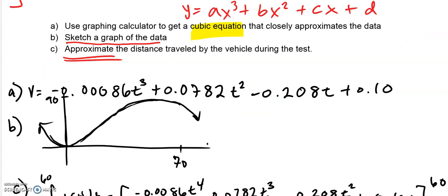Plugging that into your regression statistics regression equation, you get the velocity is negative 0.00086 T to the third plus 0.0782 T squared minus 0.0208 T plus 0.10.